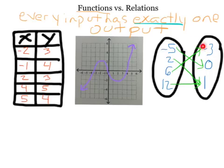We can see the same thing with the mapping diagram. Every input has only one output paired with it. There's only one arrow starting at each input that connects it to the output. This output of 1 has two arrows leading to it, but that's okay — it's still a function, because input 2 is only paired with output 1, and input 12 is only paired with output 1. Every input has exactly one output.